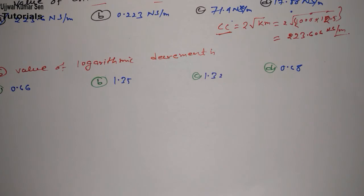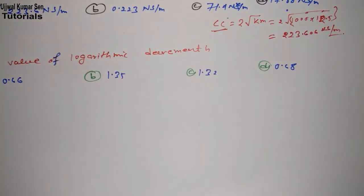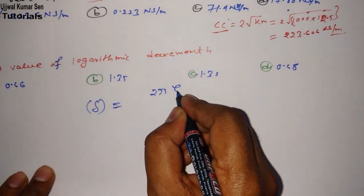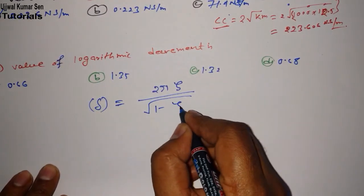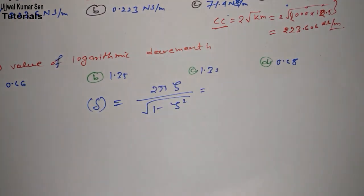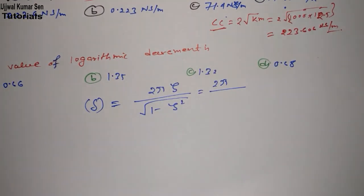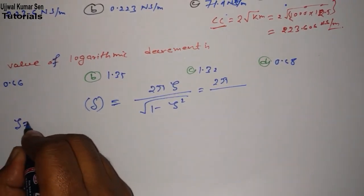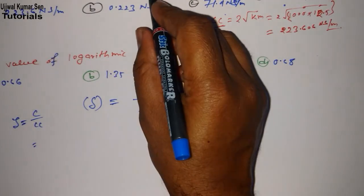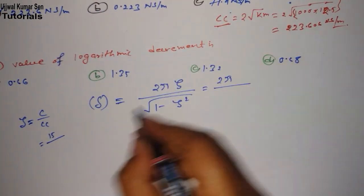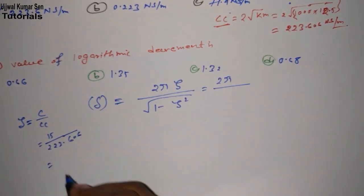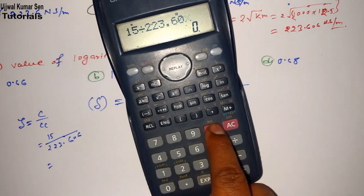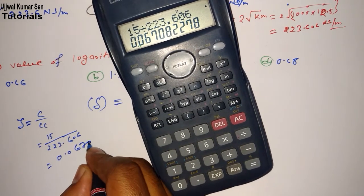Now next question is value of logarithmic decrement. We have to find out value of logarithmic decrement, that is delta. Delta equals 2 pi zeta divided by square root of 1 minus zeta squared. Now what is zeta? We don't know, so for solving further we have to get the value of zeta. We know that damping factor zeta is c by cc. c is 15 and cc is 223.606. So 15 divided by 223.606 equals 0.06708.